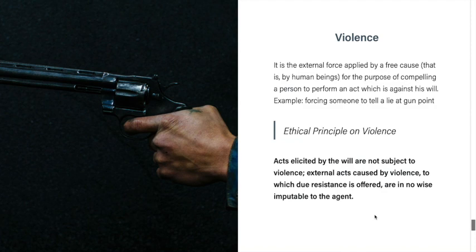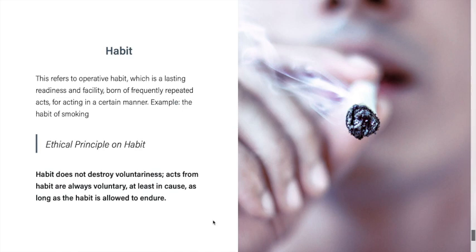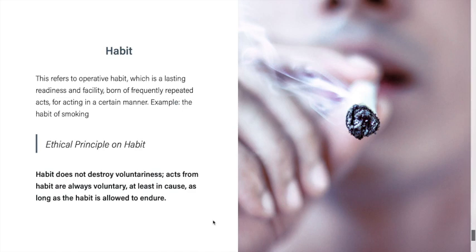Lastly, the modifier of habit. Habit refers to operative habit: a lasting readiness and facility born of frequently repeated acts for acting in a certain manner. An example is the habit of smoking. The ethical principle: habit does not destroy voluntariness. Acts from habit are always voluntary at least in cause, as long as the habit is allowed to endure. Although we may make excuses for habitual actions, habit does not destroy voluntariness or the responsibility of the agent — a person is still responsible for acts done out of habit.